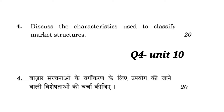Question number four: Discuss the characteristics used to classify market structures. Bazaar sarachanao ke vargikaran ke liye upyog ki jane wali vishishtao ki charcha kijiye. Yeh milega aapko Unit 10 which is Market Structure and Barriers to Entry. Uske andar aapko topic milega jis mein four characteristics mention kiye hue hain: Number and size distribution of sellers, Number and size distribution of buyers, Product differentiation, and Conditions of entry and exit. Inhi ke basis par four types ki markets hoti hain: Perfect competition, Monopoly, Oligopoly, and Monopolistic competition.